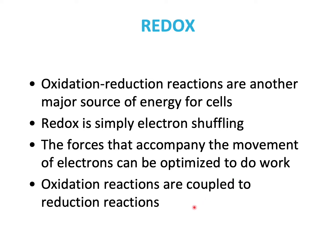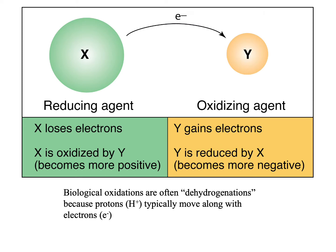Oxidation reactions are coupled to reduction reactions. This is an important slide, because it gives you a pretty good idea as to how a reducing agent and an oxidizing agent work. If X were to be a reducing agent and Y were to be an oxidizing agent, electron flows from X to Y, because X is the one that reduces Y.